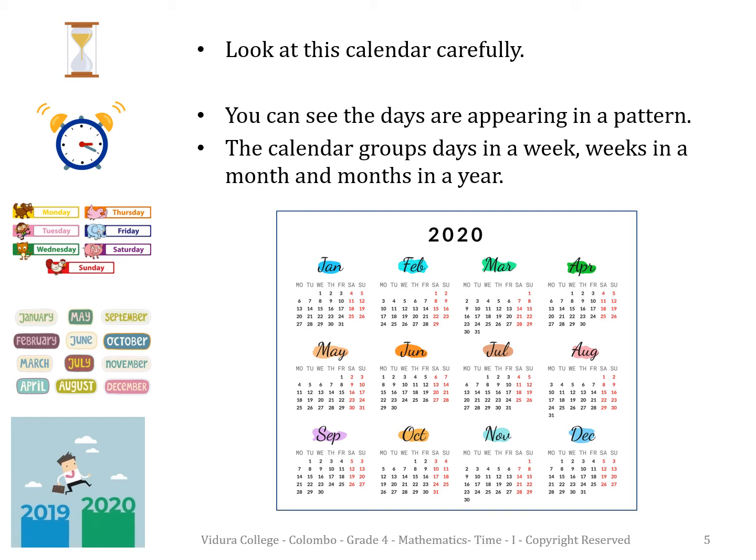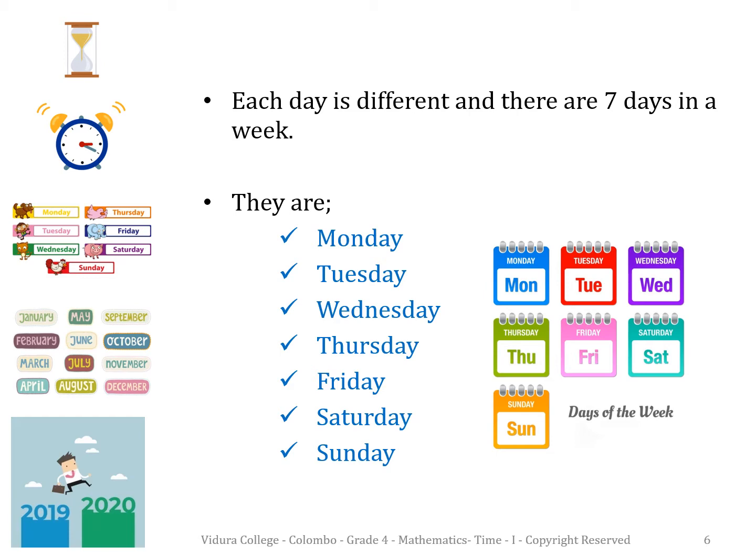Children, look at this calendar carefully. You can see the days are appearing in a pattern. The calendar groups days in a week, weeks in a month, and months in a year. Each day is different and there are seven days in a week. They are Monday, Tuesday, Wednesday, Thursday, Friday, Saturday, and Sunday.